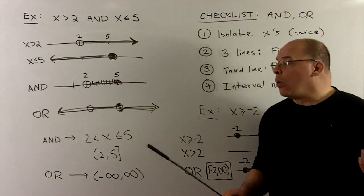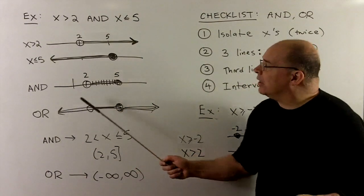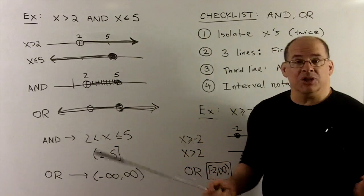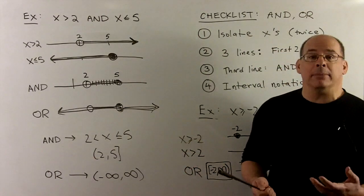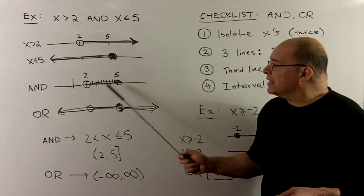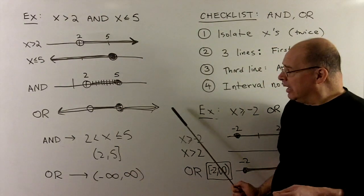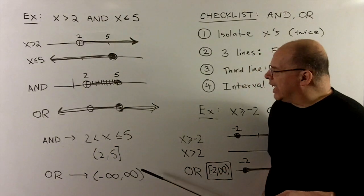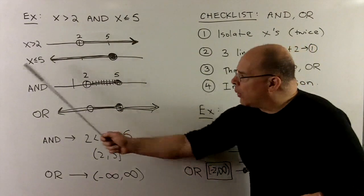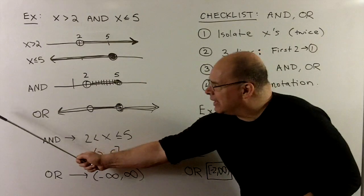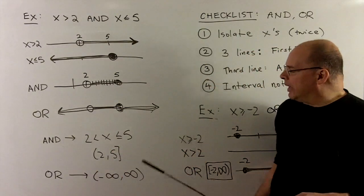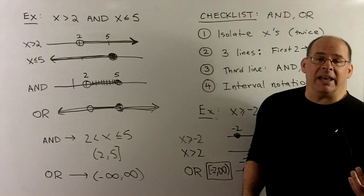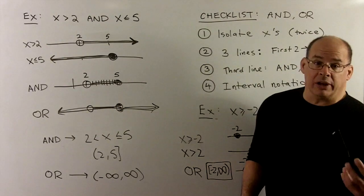If we were doing the OR, we take both sets and just put them together. Since they overlap, we get everything. In interval notation, that starts all the way at minus infinity and goes to plus infinity — in plain English, all real numbers.